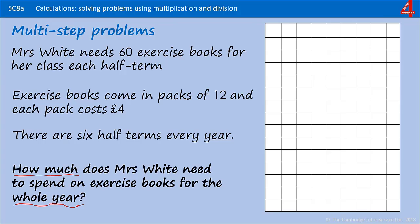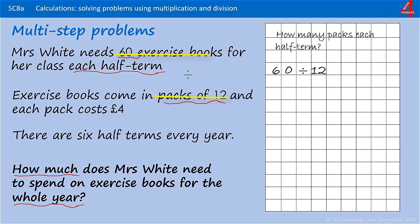Breaking the question down into mini tasks: Mrs White needs 60 exercise books each half term and the exercise books come in packs of 12. So the first thing we need to do is find out how many packs she needs each half term — that's going to be a division. 60 divided by 12 will tell us how many packs she needs each half term. If you know your 12 times table, you'll know that 5 times 12 is 60.